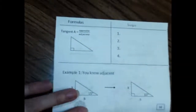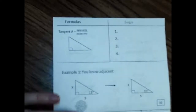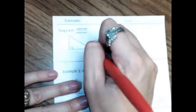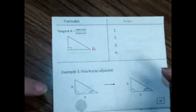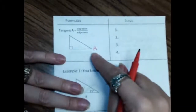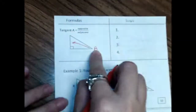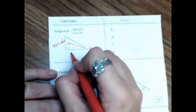The tangent is equal to the opposite over the adjacent. So first we have to know what opposite and adjacent are. This is angle A right here. Opposite is always the one that's farthest away from whatever we're talking about — so this side here is the opposite. Adjacent, we've used that word before with adjacent angles — they're the ones right next to it, so this is adjacent.